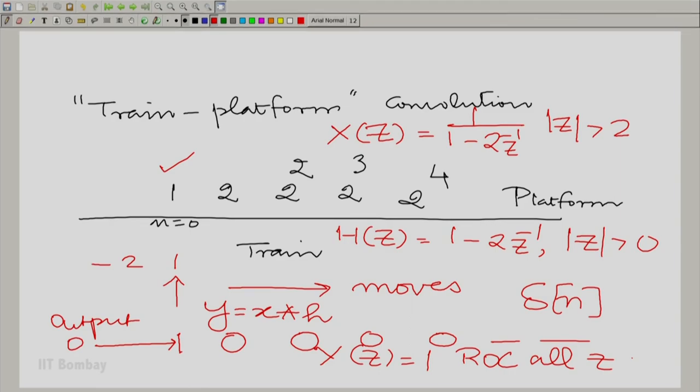So, here, the region of the intersection was essentially |z| greater than 2. But the output convolution had a region of convergence all over the z plane. The region of convergence expanded beyond the intersection.